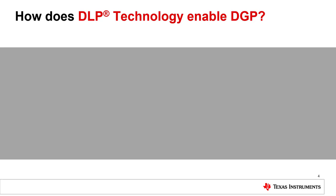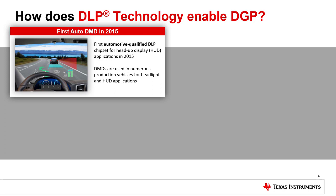Now that we've established what DGP is and shown a virtual demo, let's transition to showing how DLP technology enables DGP. DLP technology is a great fit for dynamic ground projection and has a few characteristics that have enabled the application. DLP technology is automotive qualified and is on the road today for multiple applications across many different vehicles. DLP automotive chips are designed to survive over the life of the vehicle and meet OEM standards.